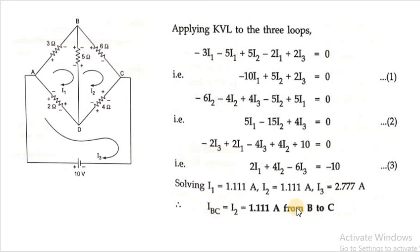So the current flow through the 6 ohm resistor is 1.11 ampere. I hope everybody understood this loop analysis very clearly. Thank you very much.